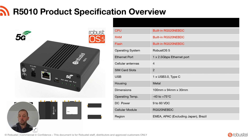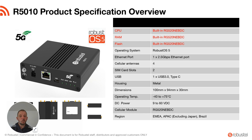The Ethernet port is 2.5 gigabit, simply because a gigabit port could become rate-limiting on 5G connections on this product. There are four antenna connectors, as is required for the frequencies for 5G, dual SIM for redundancy, and there are several other specs that we can come on to in the presentation.